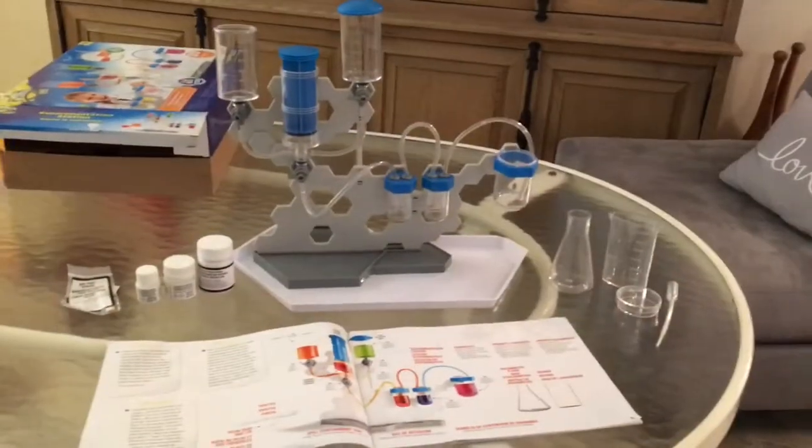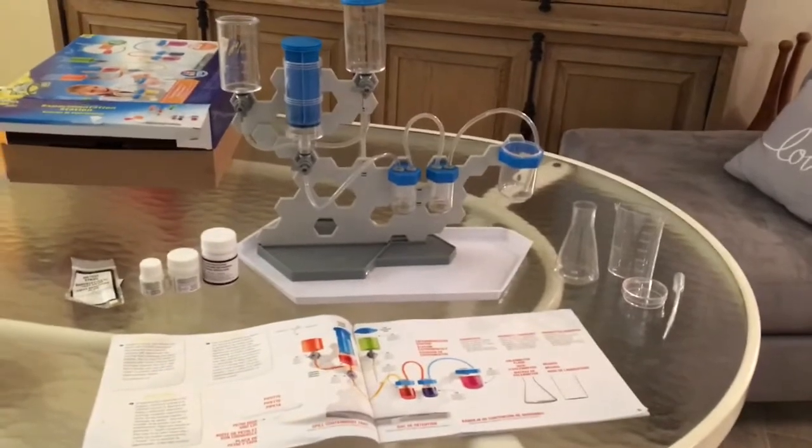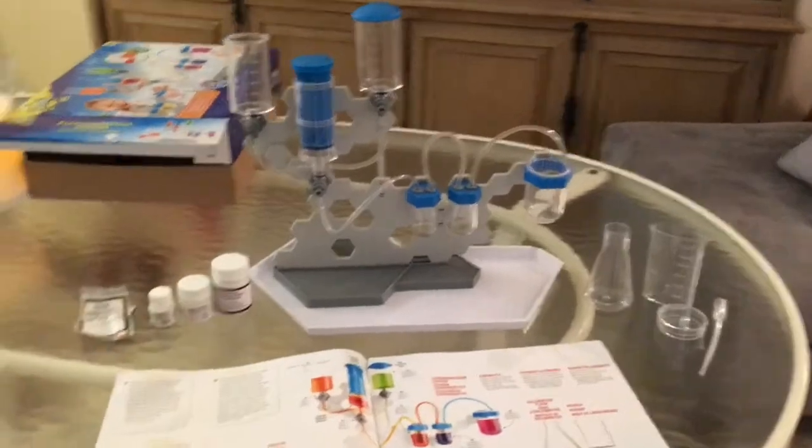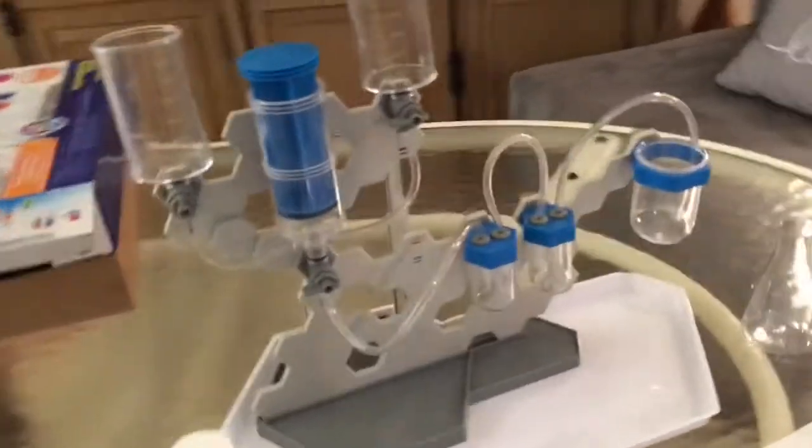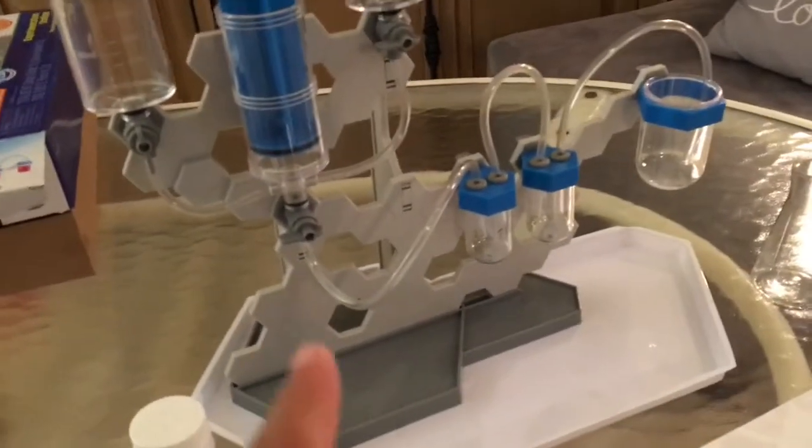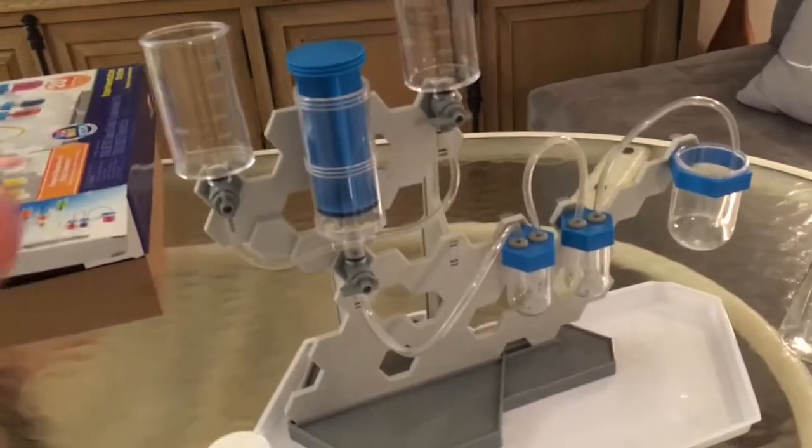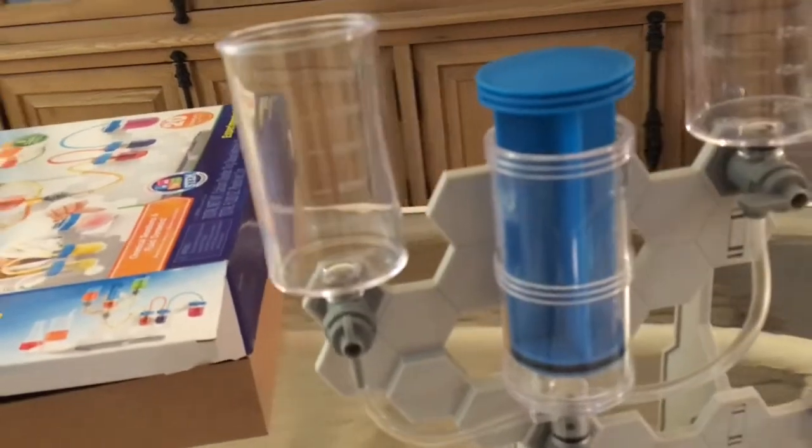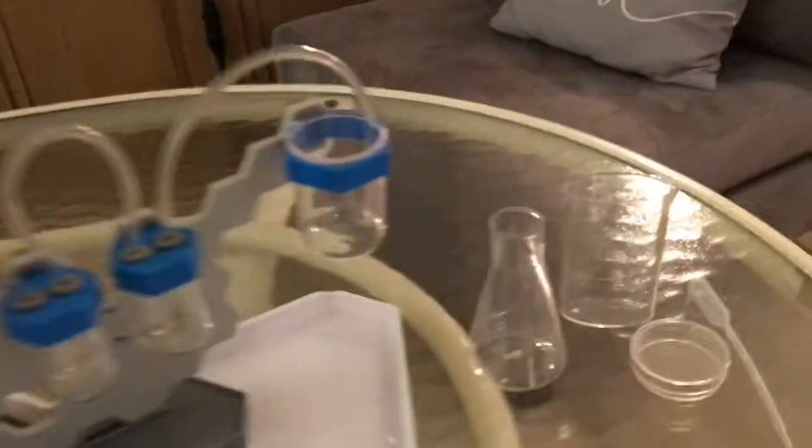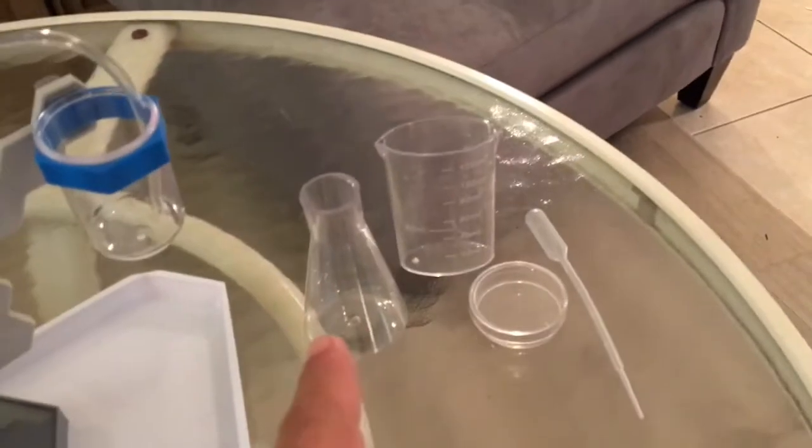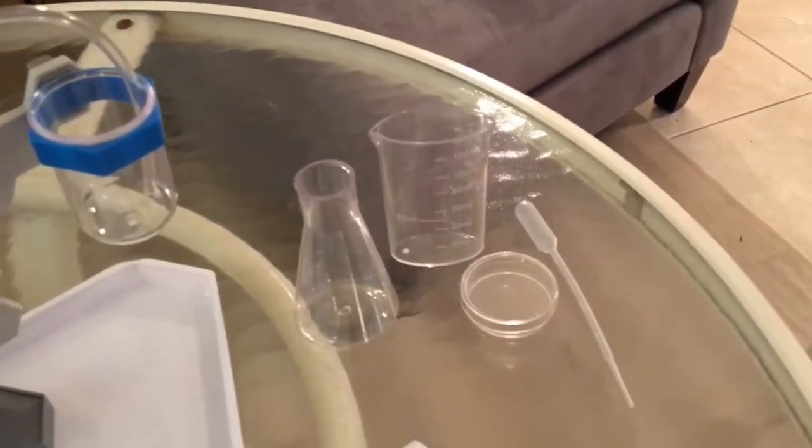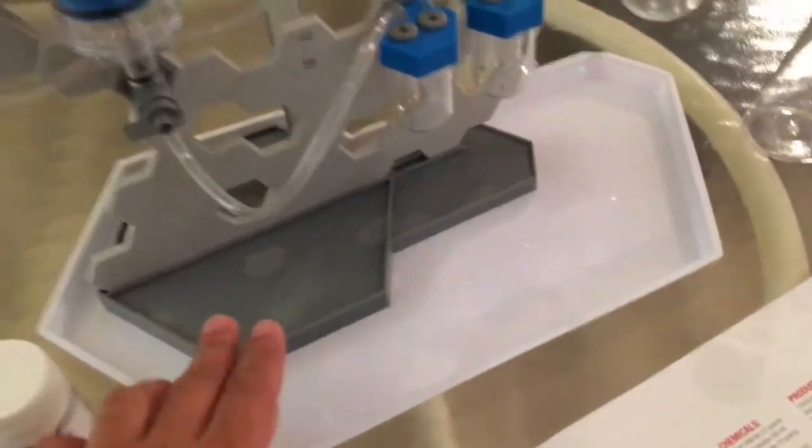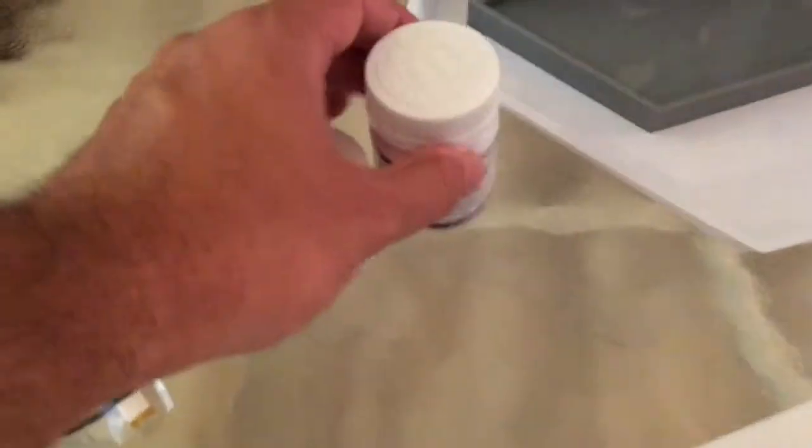And now here is the completed experiment station. Here is the sophisticated setup with the tubes and the valves and all the different containers. They all have measurements on them in milliliters. We have a little extra - we have an extra flask, petri dish, and a dropper.